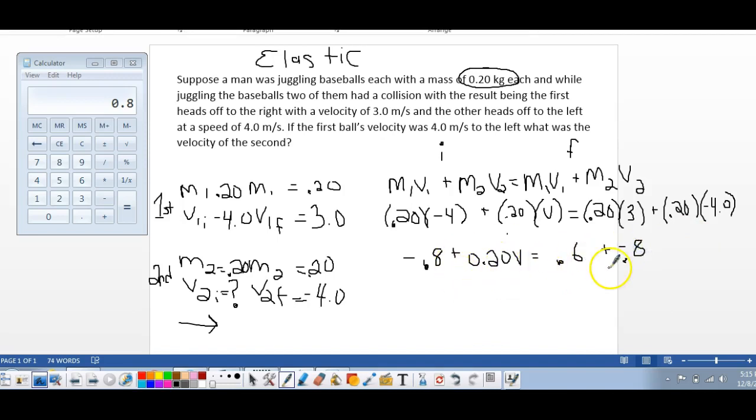And then we can just do our math over here. This is going to be, we get this together, it's going to be negative 0.2. This could equal this, 0.20V, and then we're going to have to add 0.8 to both sides.